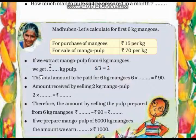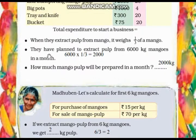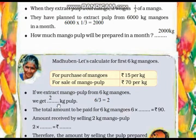Next — if we extract mango pulp from 6 kg of mangoes, we get how many kg of pulp? It is said that when pulp is extracted from a mango, it weighs one third of the mango. So they will get 6 divided by 3 — from 6 kg of mango they will get 2 kg of mango pulp.